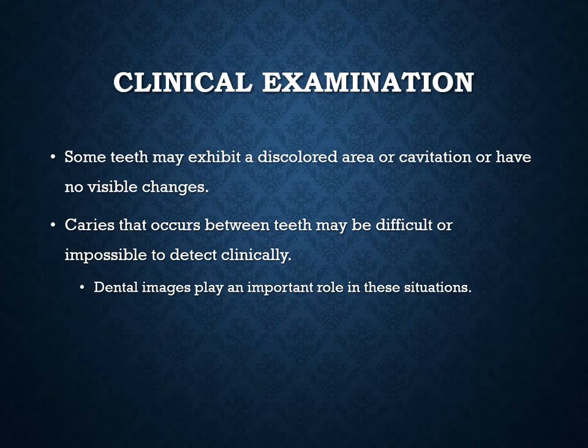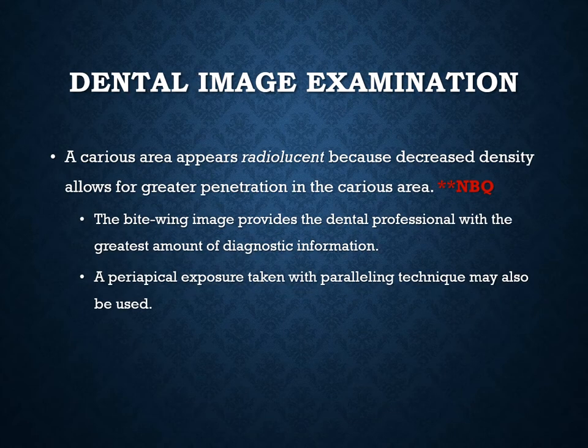This could be on your boards: a carious lesion will appear radiolucent on a dental image because it is not as dense as the enamel around it. The enamel has demineralized, becoming less dense, so x-rays penetrate that area more easily and reach the sensor. A cavity means the enamel is not intact and is demineralized. The bitewing image is the best image for looking for cavities, especially interproximal ones. Periapical images taken with the paralleling technique are also useful, but not quite as good due to angulation.